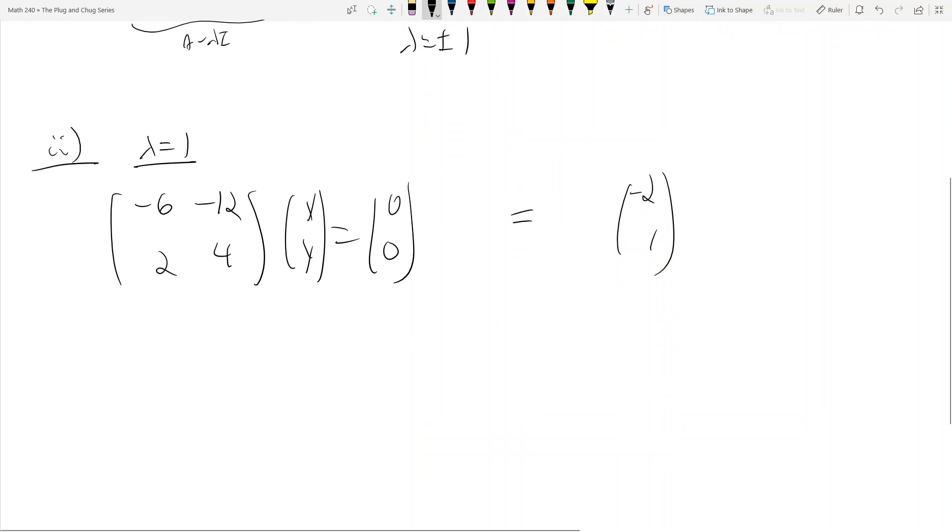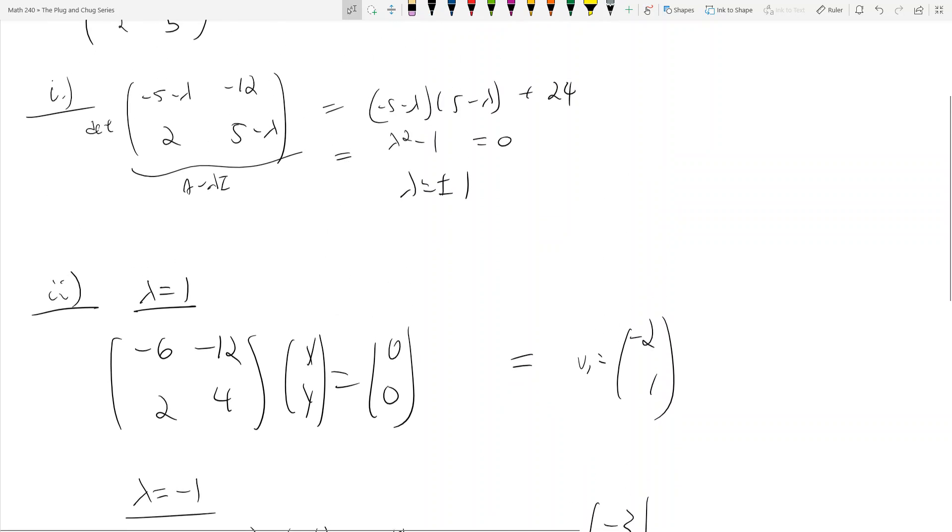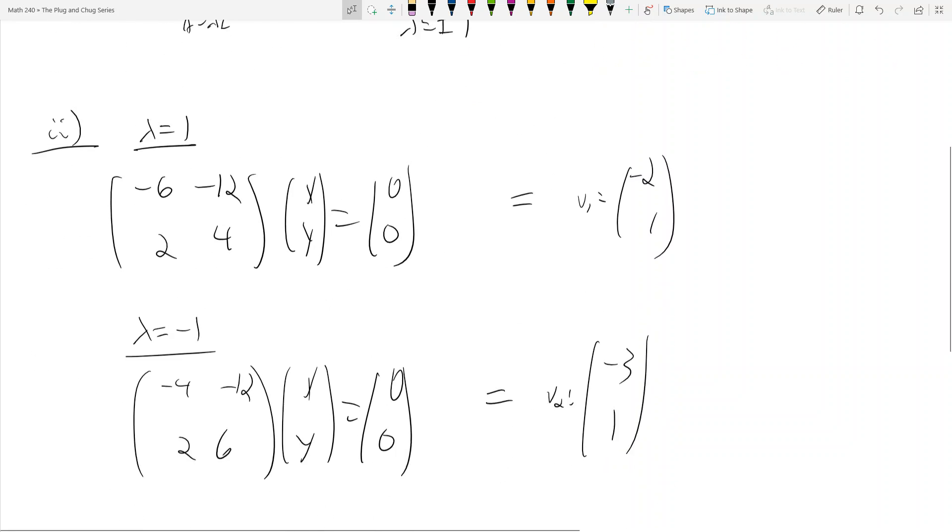And for λ equals -1, I see that this becomes (-4, -12; 2, 6) times (x,y) equals (0,0). Let's make this (-3, 1) as my eigenvector. So here's V1, here's V2. Since I have a 2 by 2 matrix I only need to find two eigenvectors. These two eigenvectors form an eigenbasis for the eigenspace of this 2 by 2 matrix A.